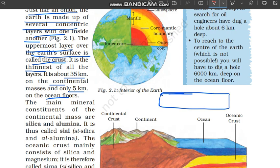On the earth's surface there are continents — our countries where we live — and there are oceans. The continental layer goes up to 35 km deep. Where there is only water below — the ocean floor — the crust from the ocean bed going downward is only 5 km. So the earth's crust under the ocean floor is 5 km thick.